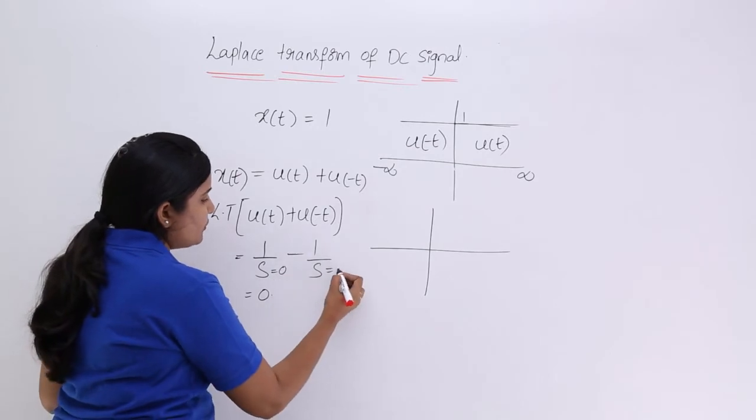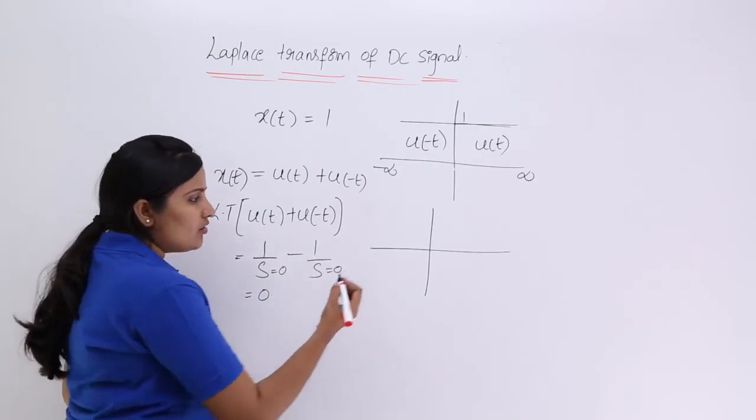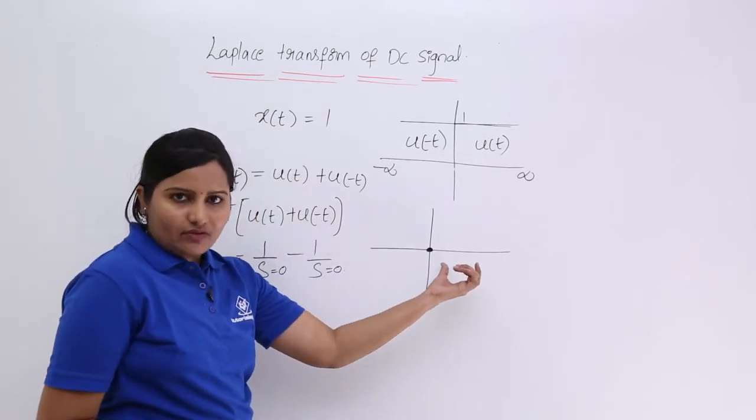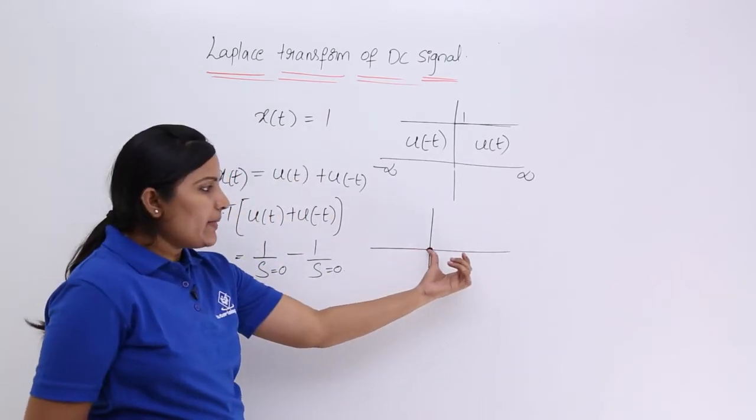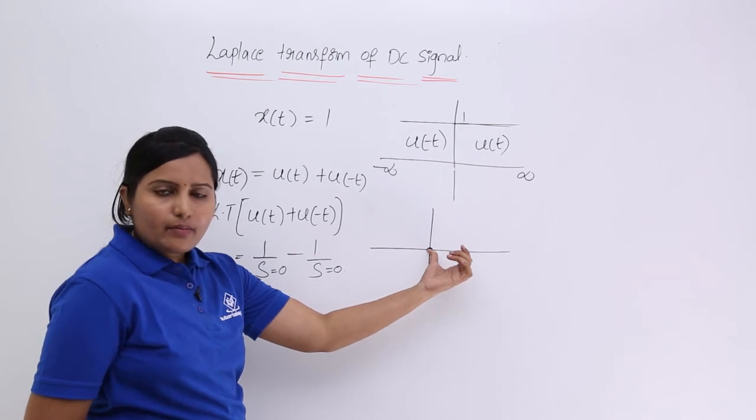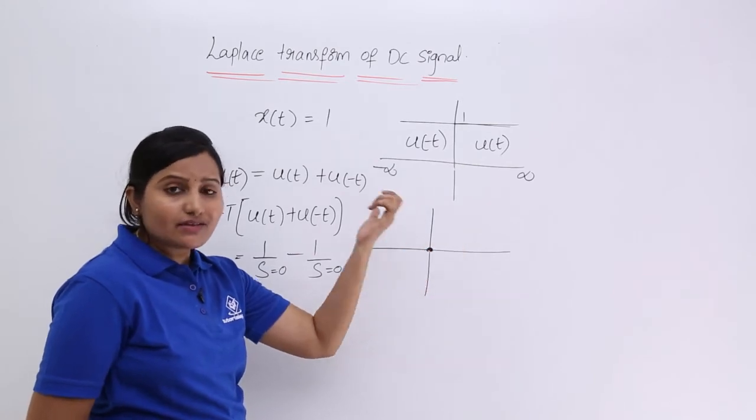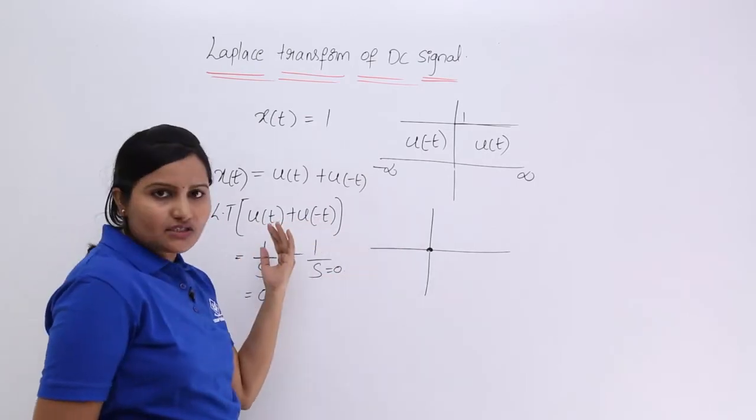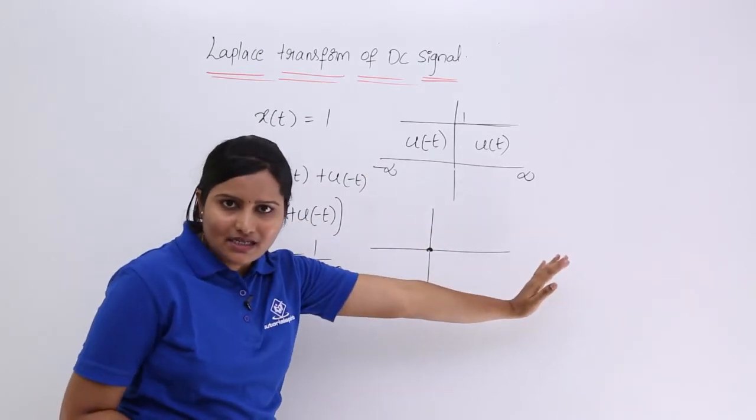When you equate with 0 your S is equivalent to 0, always your real part is equivalent to 0. Your real part is equivalent to 0 but your real part is greater than 0 or less than 0 means here that is greater than 0 and here that is less than 0.